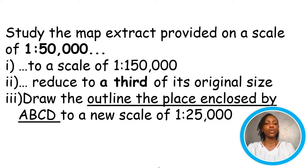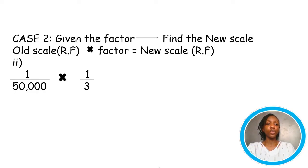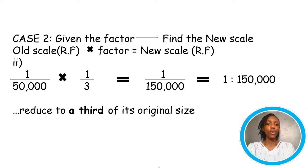Looking at instances again, let's solve question 2. So, we're given the factor 1 over 3. Multiplying the original scale by the factor, we have 1 over 150,000, which is the same thing as saying 1 ratio 150,000, reduced to a third of its original size. In case anyone is confused because the question said reduced to a third of its size, but our answer 150,000 is bigger than 50,000. Firstly, don't forget that we are looking at the entire fraction as a whole and 1 over 150,000 is actually smaller than 1 over 50,000. You can confirm with your calculator.